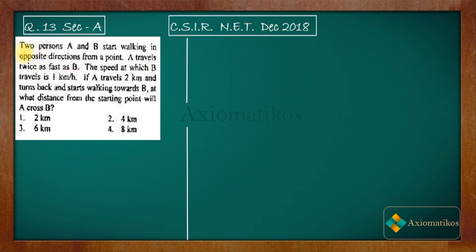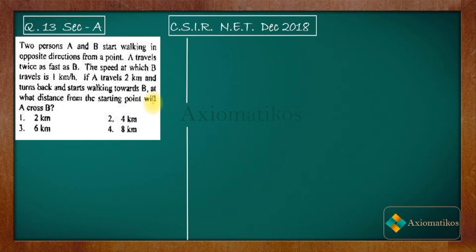Let us have a look at the problem: two persons A and B start walking in opposite directions from a point. A travels twice as fast as B. The speed at which B travels is one kilometer per hour. If A travels two kilometers and turns back and starts walking toward B, at what distance from the starting point will A cross B?